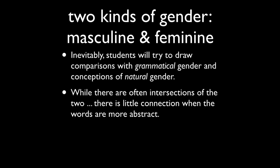Inevitably, because the terms are masculine and feminine, students are going to be drawing comparisons with grammatical gender and conceptions of natural gender. But there are sometimes intersections of this sort, such as boy — ragazzo — and ragazza for girl. But while there's sometimes a connection, it usually doesn't hold true when the words are more abstract, or there's no inherent natural gender to the terms. Take, for instance, giorno e notte. Giorno is day and is masculine. Notte is night, and it's feminine. So there's little gender inherent in both of those objects — they're both parts of the day and they have different genders. Don't look for too much logic when dealing with the intersection of grammatical gender and natural gender.